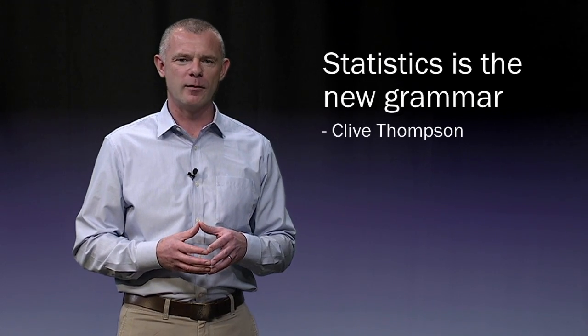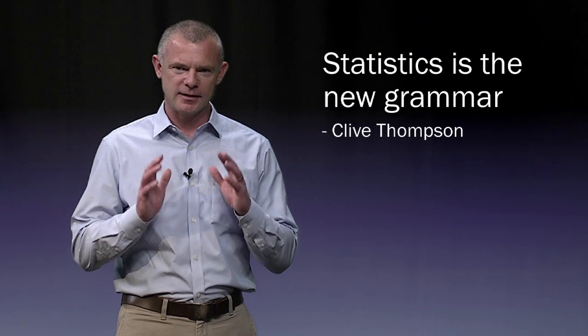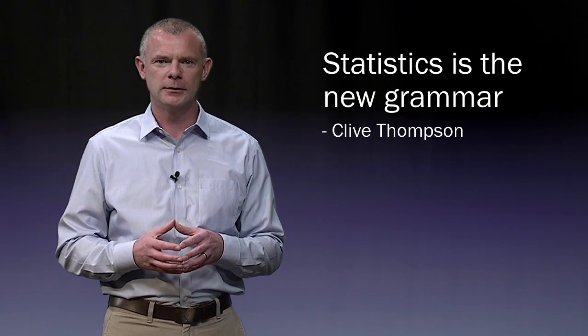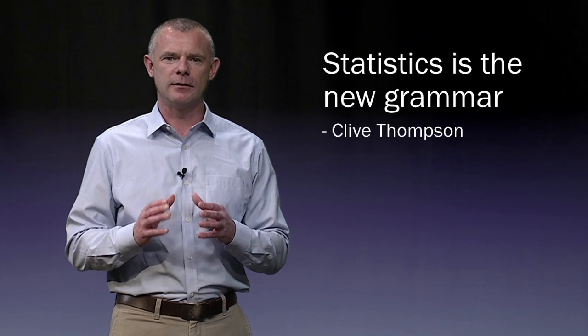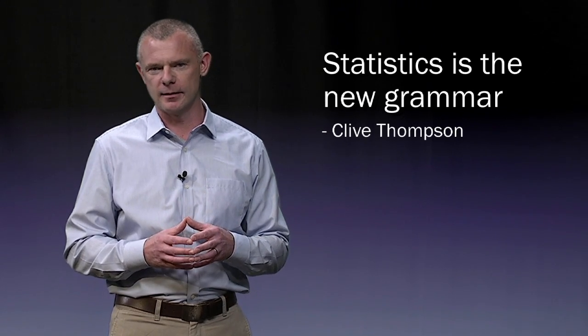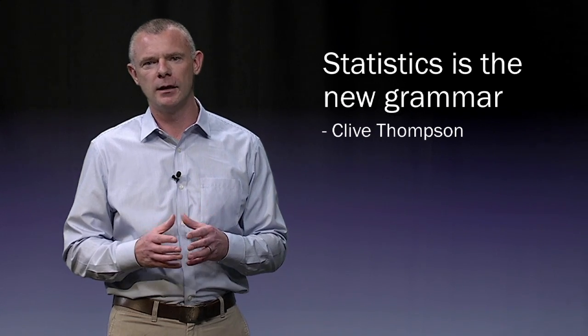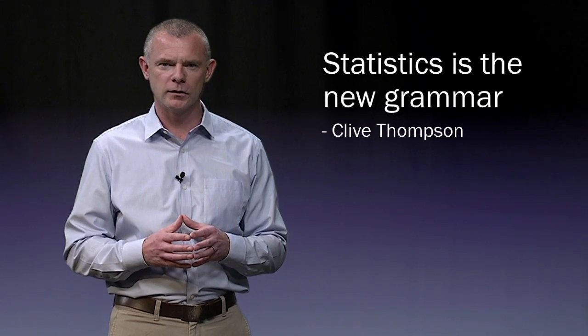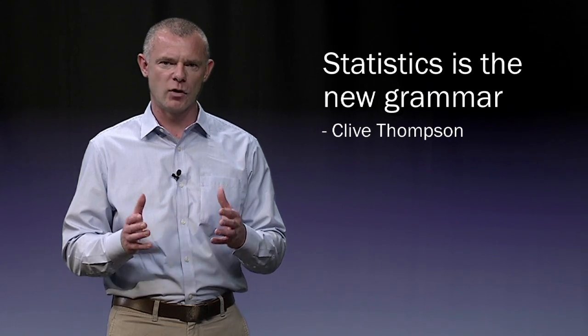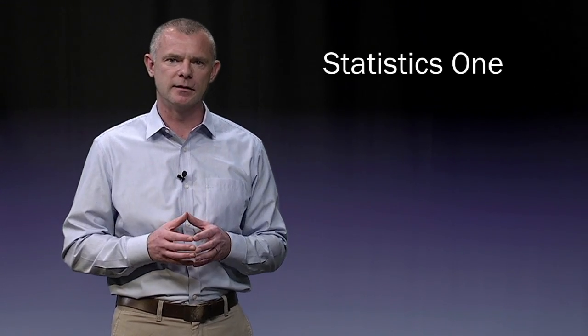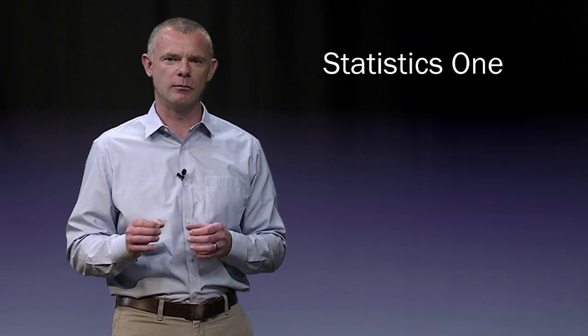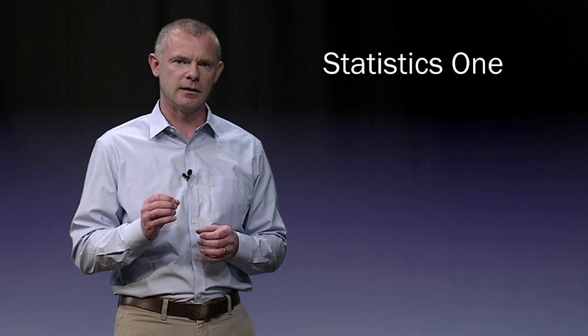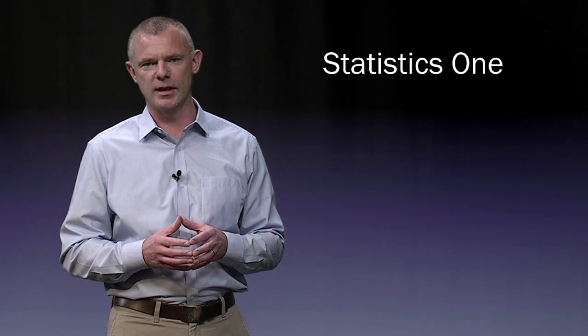Last year in an article for Wired Magazine, journalist Clive Thompson claimed, statistics is the new grammar. What did he mean by that? Well, we all know that basic literacy is essential for the survival of a democratic society. Without the ability to read and write, illiterate citizens remain uninformed, or worse, are vulnerable to lies and propaganda. The same is now true for math and statistics. The ability to read statistics and to think critically about mathematical arguments is now as essential as being able to read your native language. Statistics, just like basic literacy, is essential for democratic societies to not only survive, but to thrive.